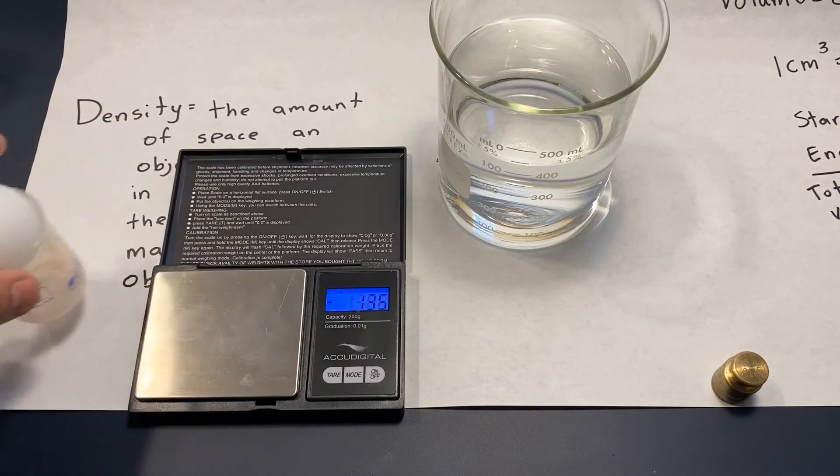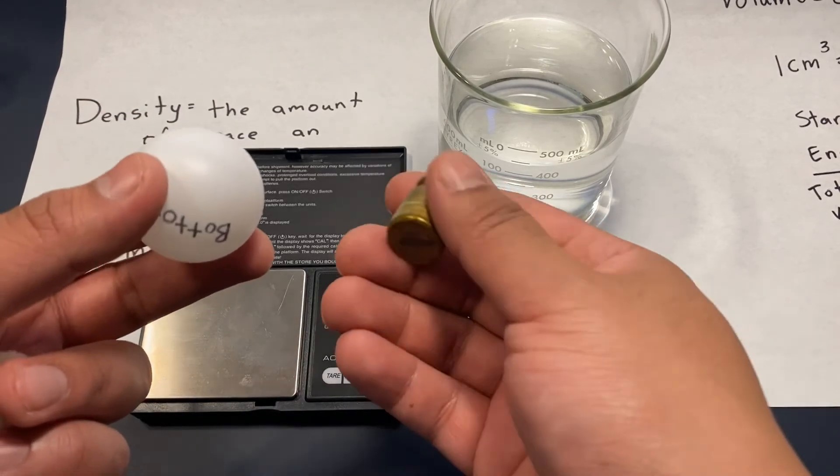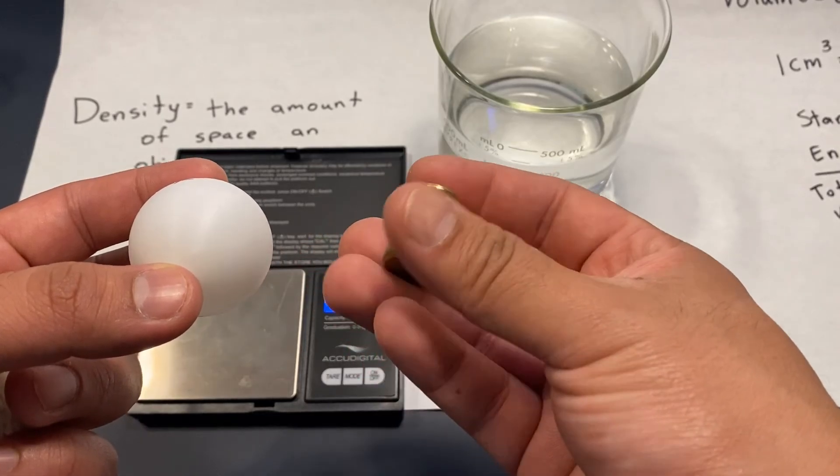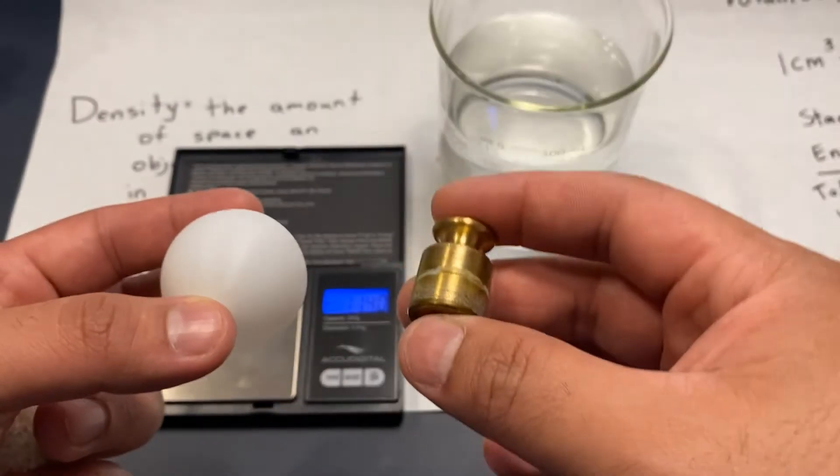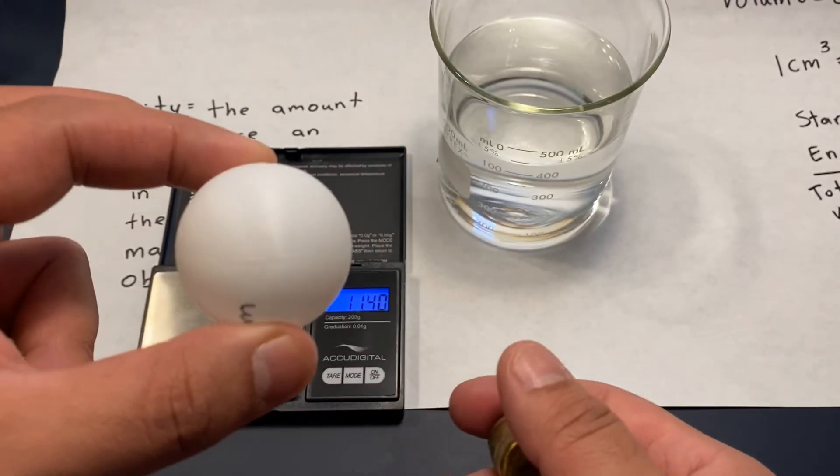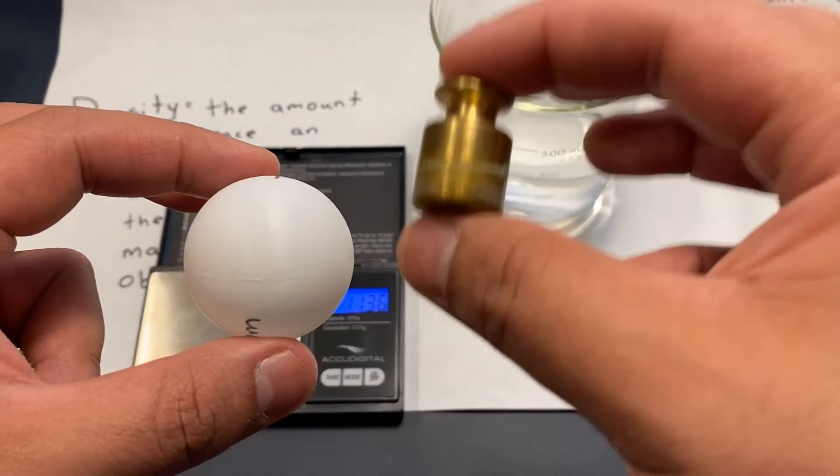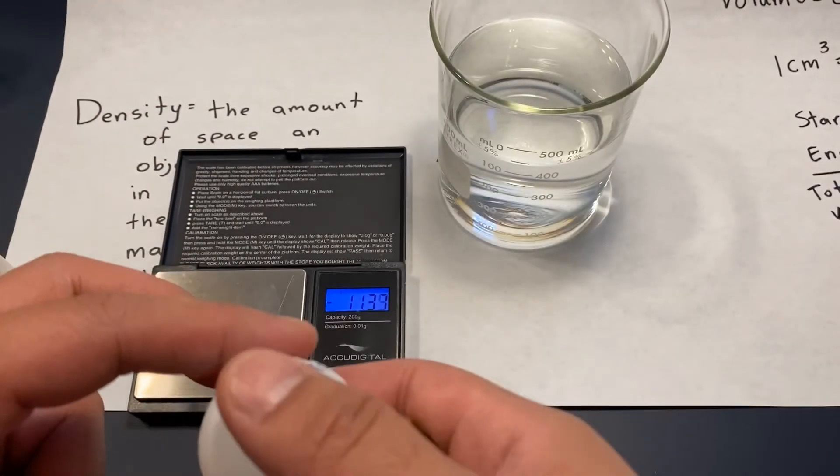All right, so which one weighs more? Which one has more density? The weight does, because it's heavier. And just because the ping pong ball is bigger doesn't mean it's going to be heavier. That is density.